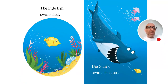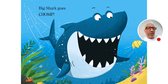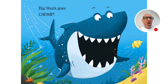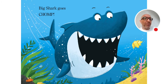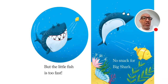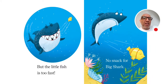The little fish swims fast. Big shark swims fast too. Big shark goes chomp and tries to eat the little fish, but the little fish is too fast. No snack for big shark.